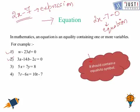Now here are some examples. As you can see, the first one is w minus 23d. If this is just written like this, then it is an expression. But if we put an equals sign and any number here, like 0, it becomes an equation. To solve this, we can add 23d to both sides: w minus 23d plus 23d...